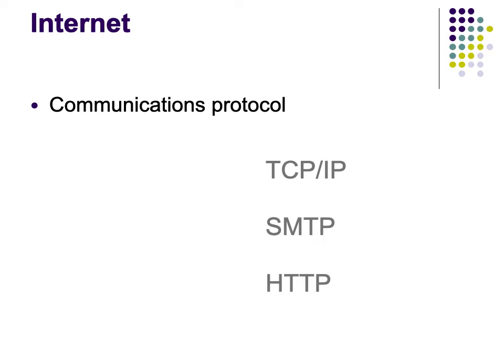SMTP is an email protocol. HTTP — perhaps the one you're most familiar with — Hypertext Transfer Protocol, is a standard to exchange and transfer information for web pages. These standards are set by committees called Internet standards bodies. The Internet Engineering Task Force or the World Wide Web Consortium would be examples.